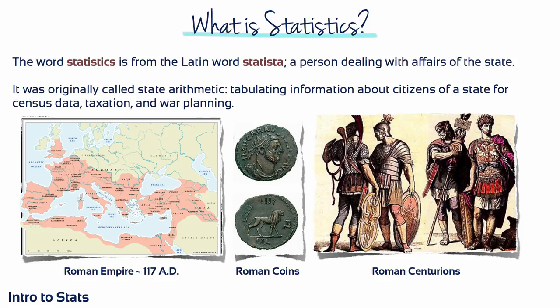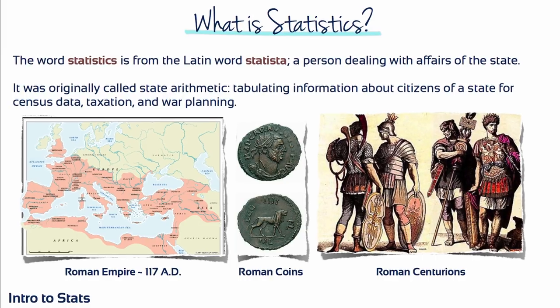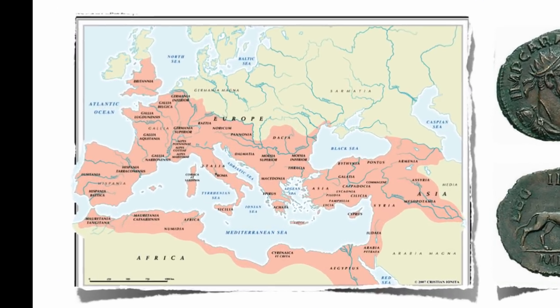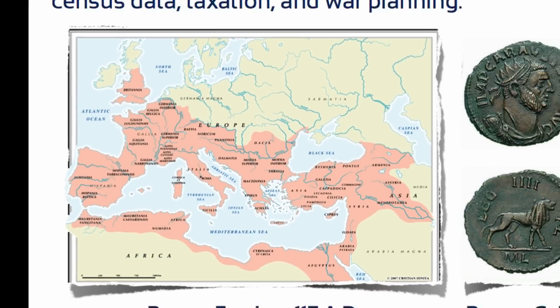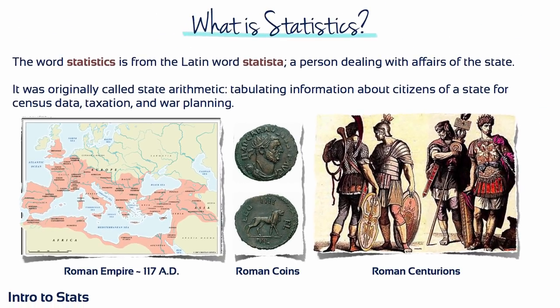The Roman Empire reached its greatest expanse during the reign of Trajan with a population of roughly 60 million people. In 117 AD, it stretched from Britain to Syria and from the north coast of Africa to the centre of Europe. That's an enormous number of people to collect, organise and interpret information about.